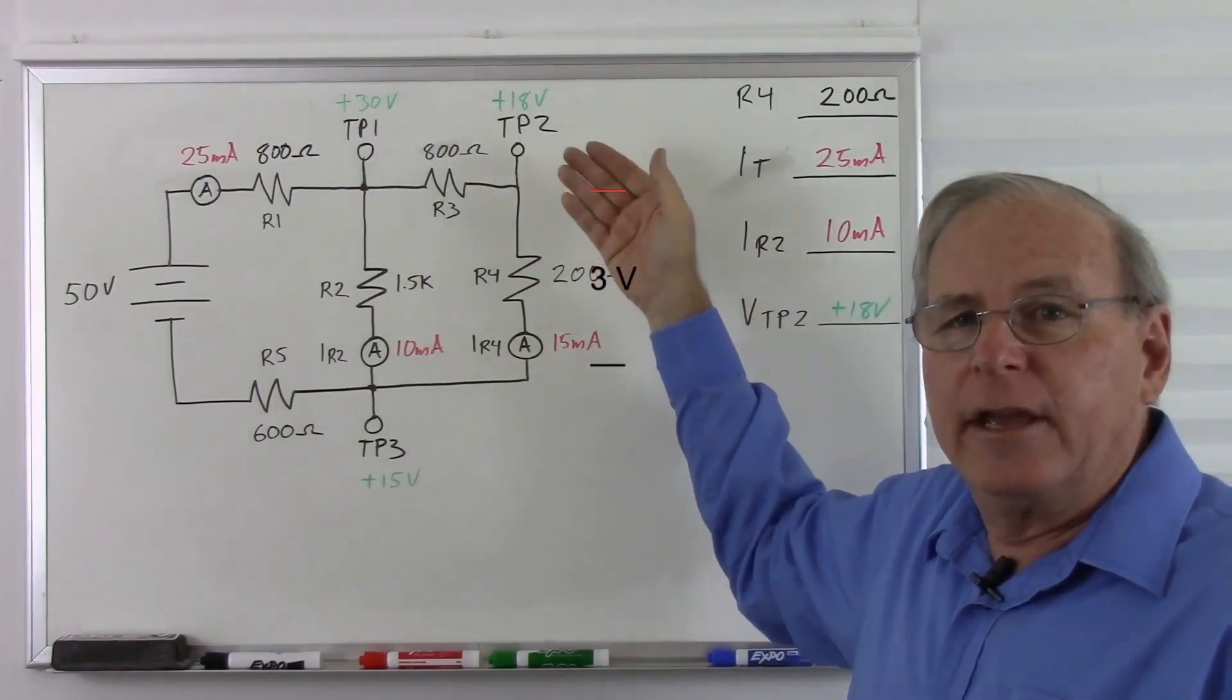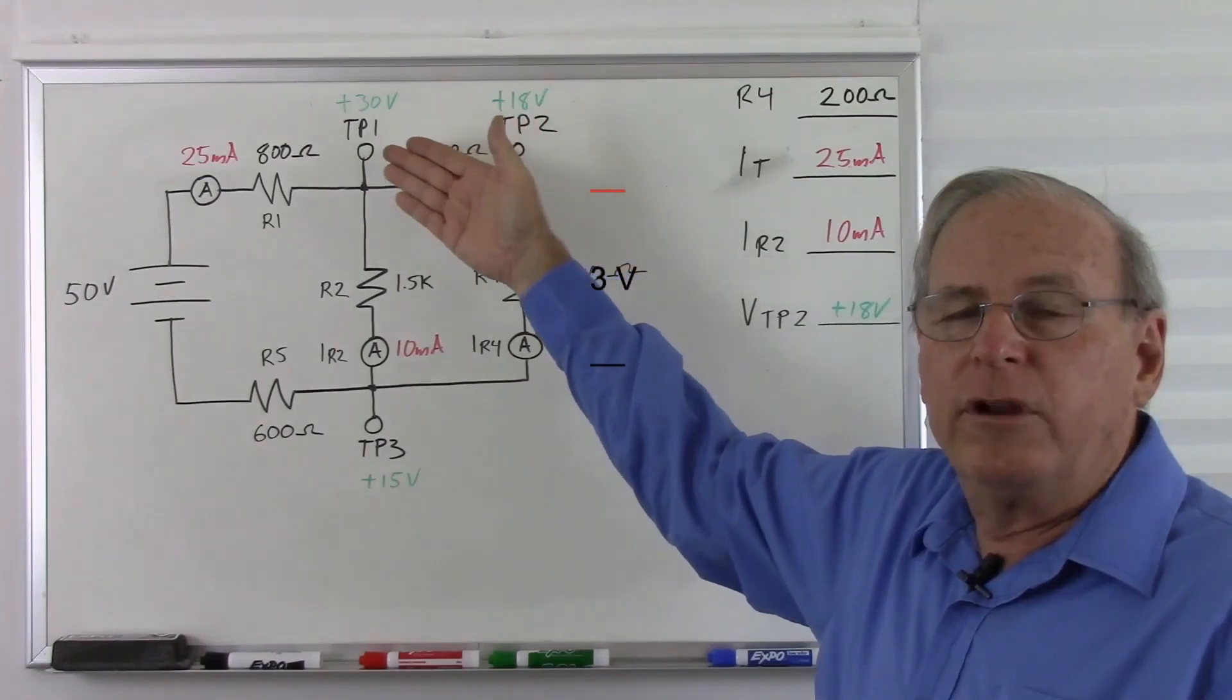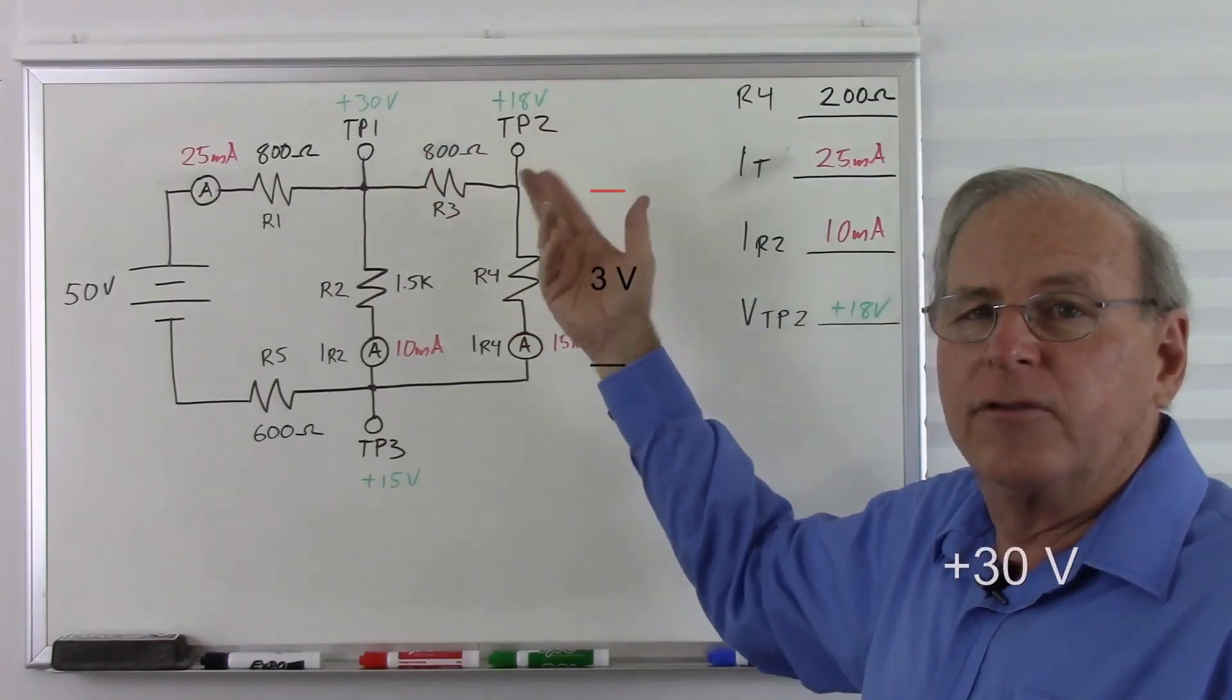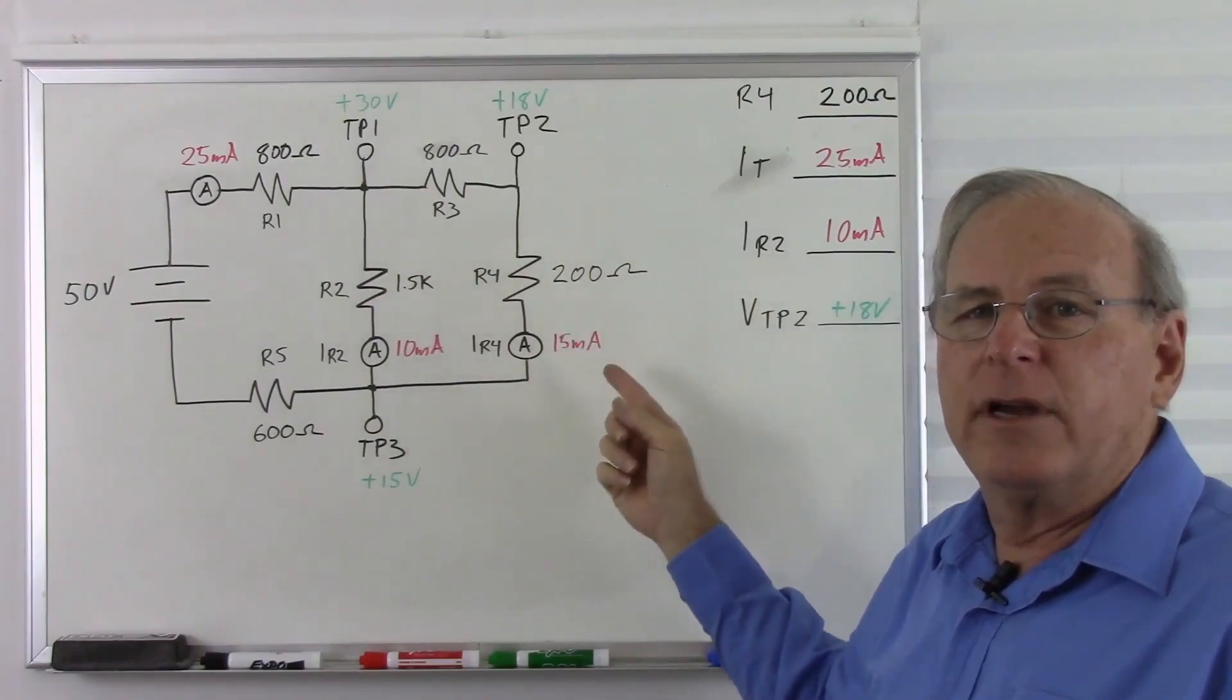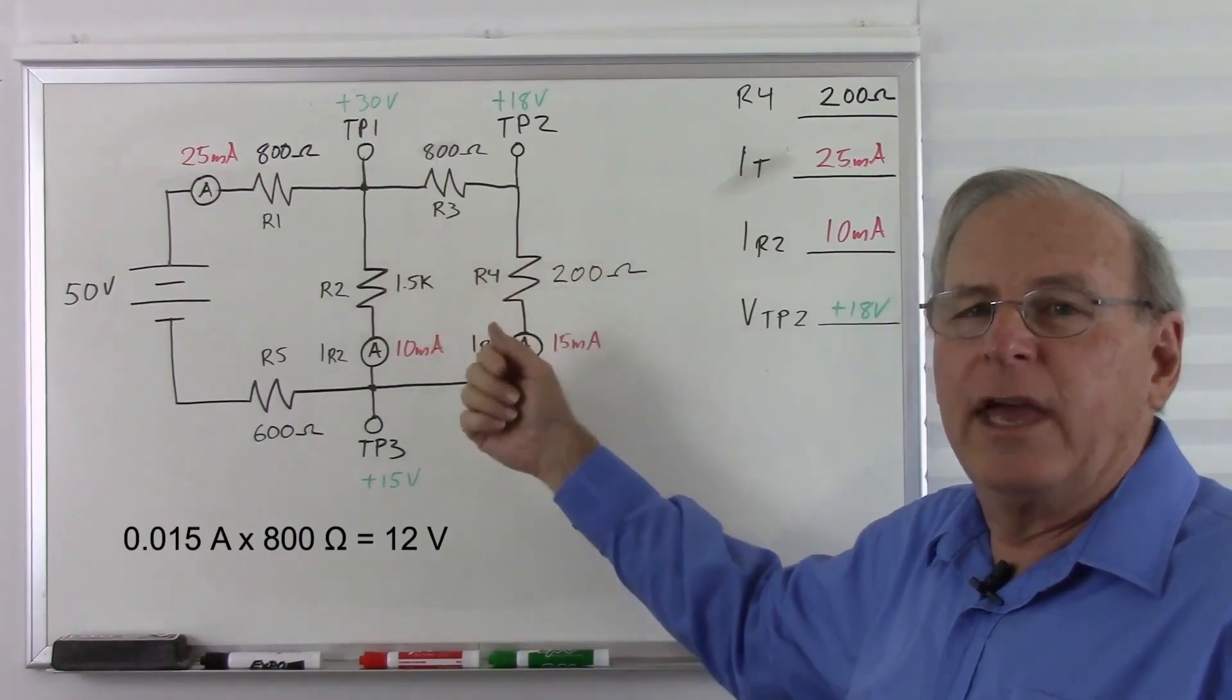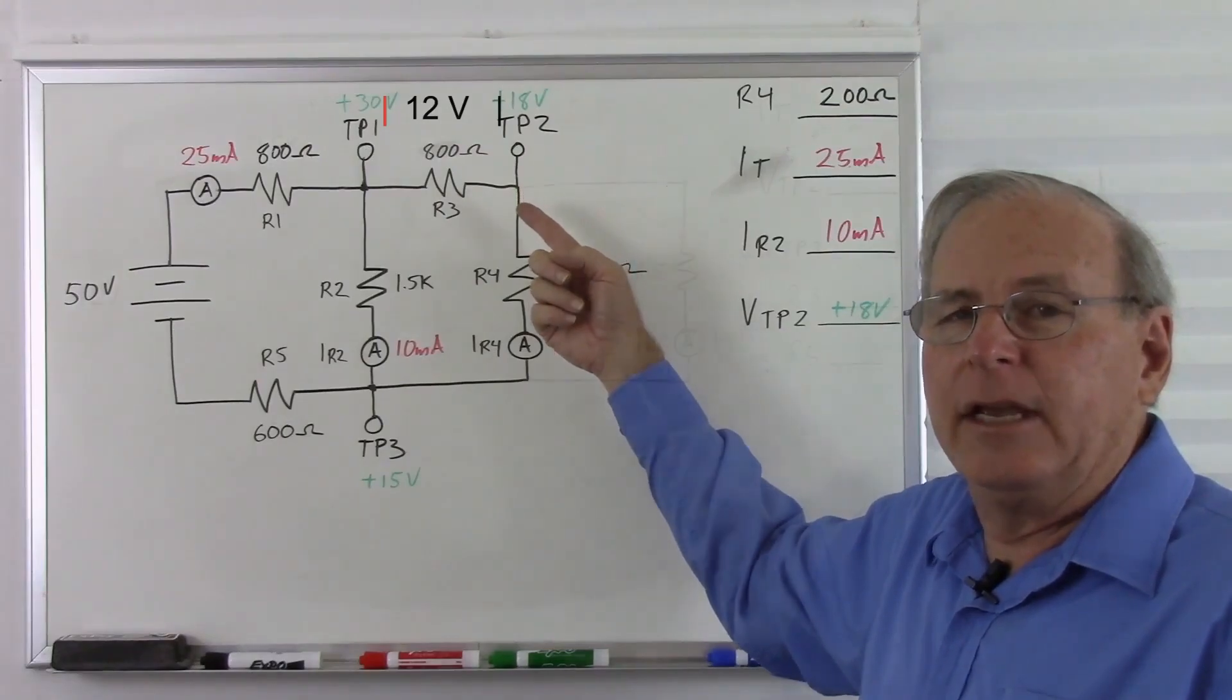Let's double check that. If we have 3 volts across here, we should have another 12 volts to reach this 15 volts. So we have 15 volts plus 3 plus 12 equals 15. So let's see if there are 12 volts across this 800 ohm resistor. So we have 0.015 amps times 800 ohms. That gives us 12 volts. And so we have 30 volts here minus 12 equals 18.